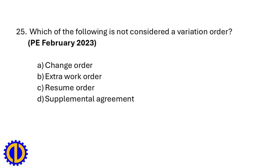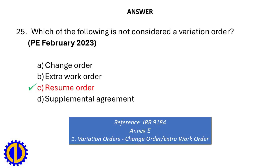Which of the following is not considered a variation order? a. Change order, b. Extra work order, c. Resume order, d. Supplemental agreement. Answer: c. Resume order. Reference: IRR 9184, Annex — Variation Orders.